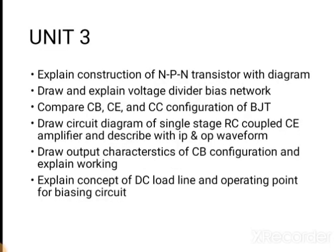In Unit 3, there might be questions on: explain construction of an NPN transistor with diagram, or PNP transistor with diagram. Then draw and explain the voltage divider bias network. An important question is to compare CB, CE, and CC configuration of BJT — that is common base, common emitter, and common collector configuration. Draw the circuit diagram of a single stage RC coupled CE amplifier and describe it with input and output waveforms.